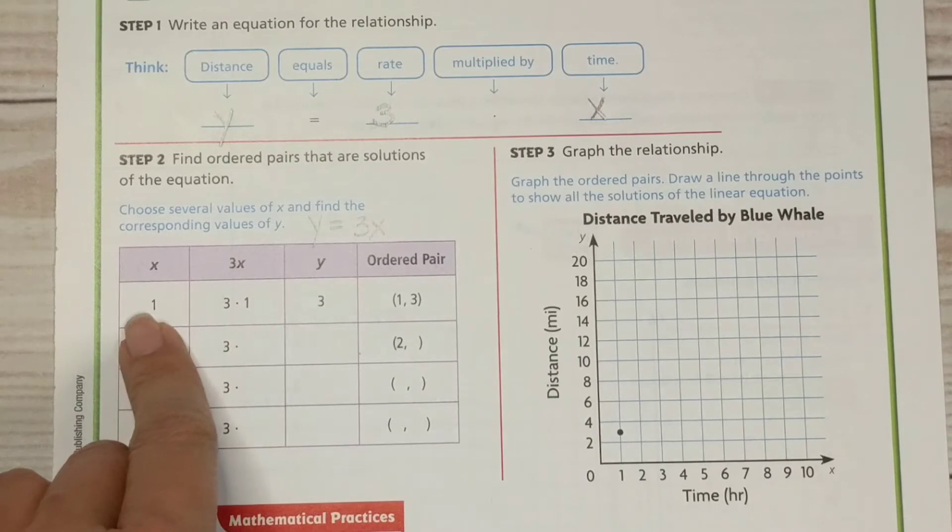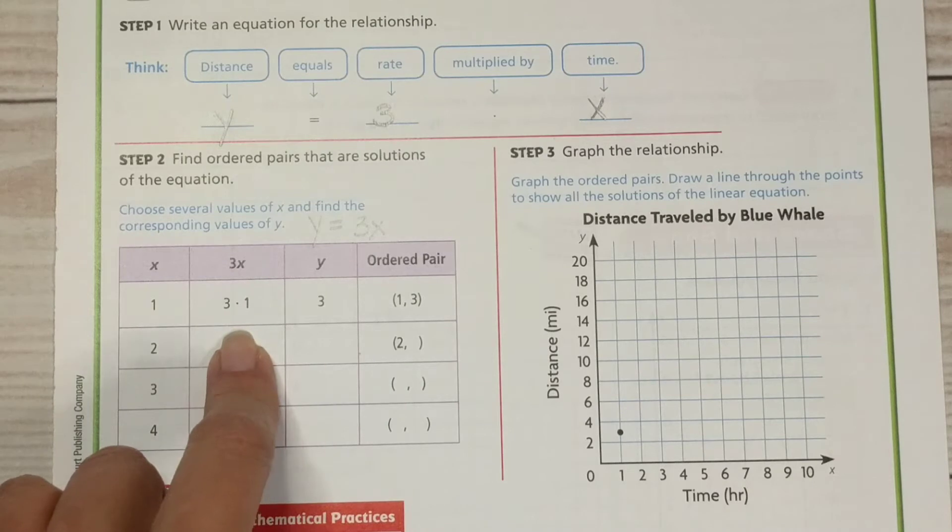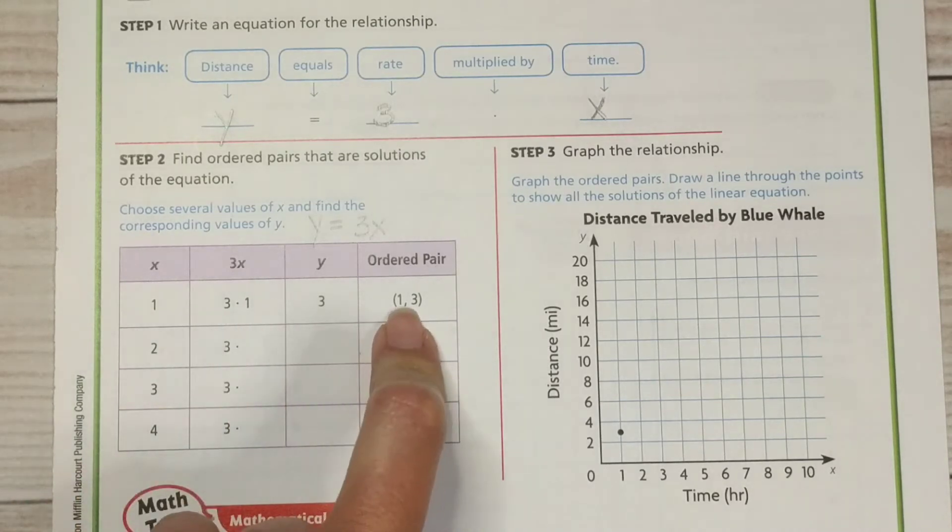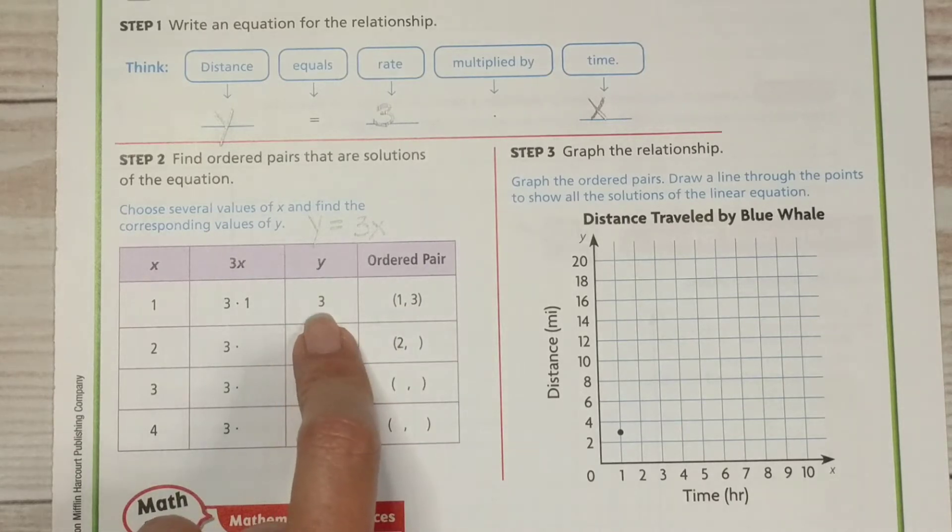So if the whale only swims 1 hour, then 3 times 1, because it can swim as fast as 3 miles per hour, the ordered pair is 1, 3, because it only went 3 miles. It only swam for an hour, so it only got 3 miles.